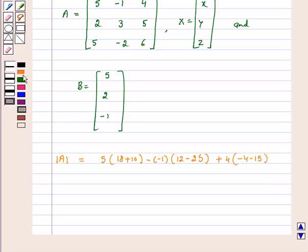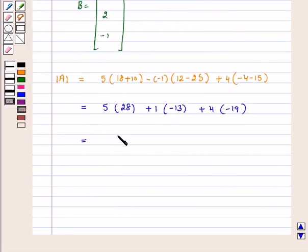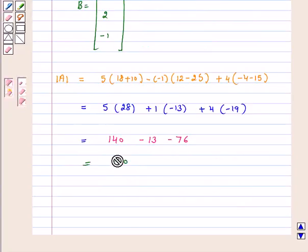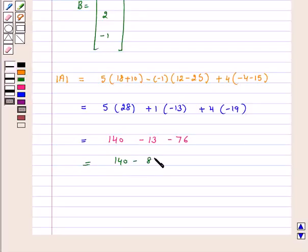This equals 5 times 28 plus 1 times minus 13 plus 4 times minus 19. This equals 140 minus 13 minus 76, which equals 140 minus 89, that is equal to 51.